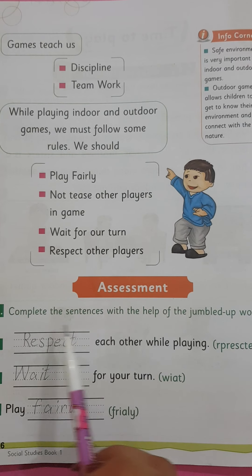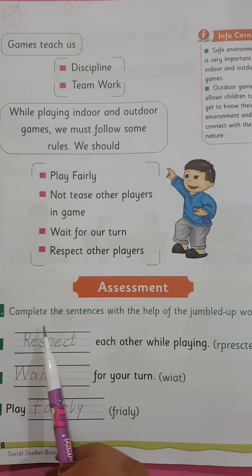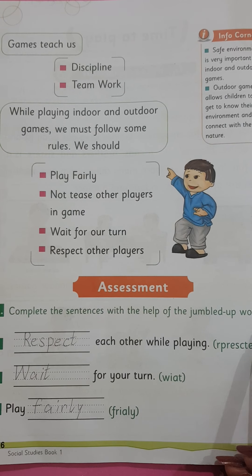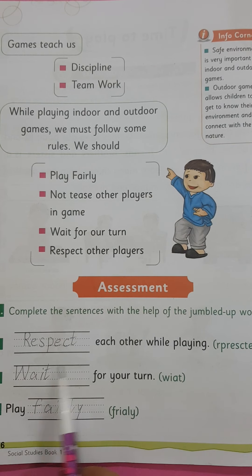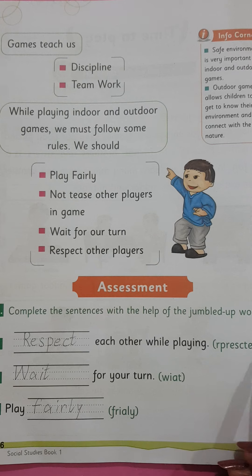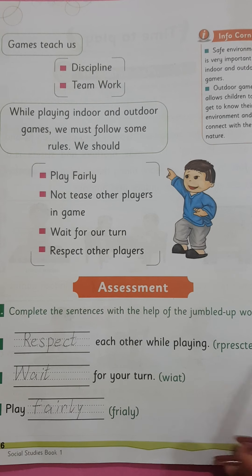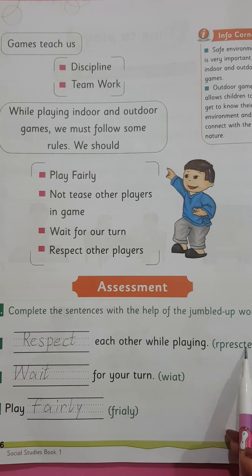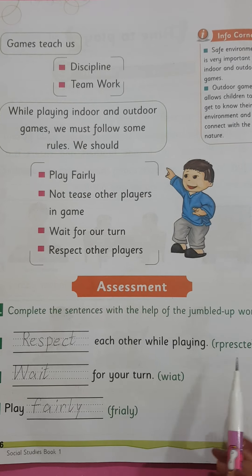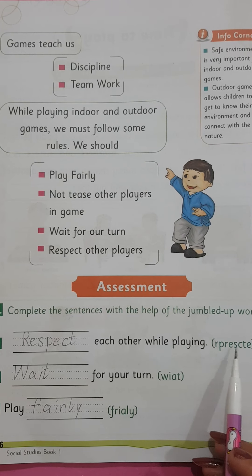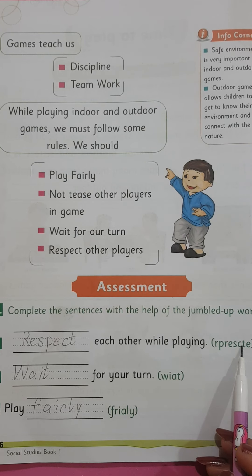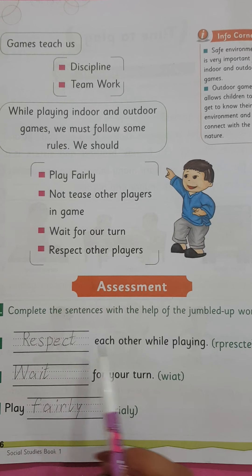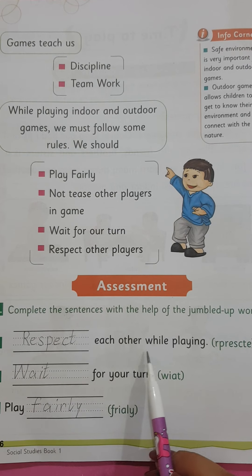The first question is an assessment: complete the sentences with the help of the jumbled up words. In each statement, some spellings are given in jumbled, mixed-up order — the sequence is not correct. We have to write these spellings in the correct order with the correct spelling on the dash.